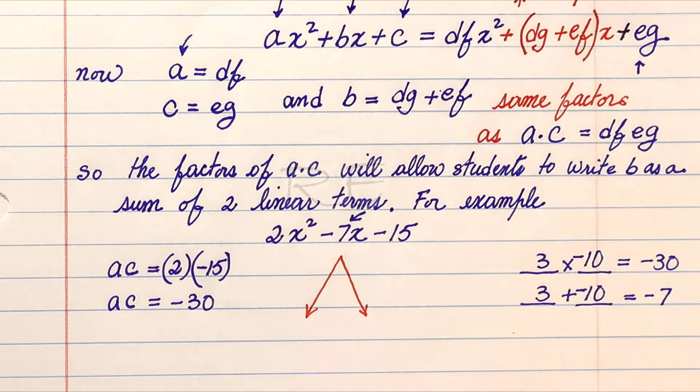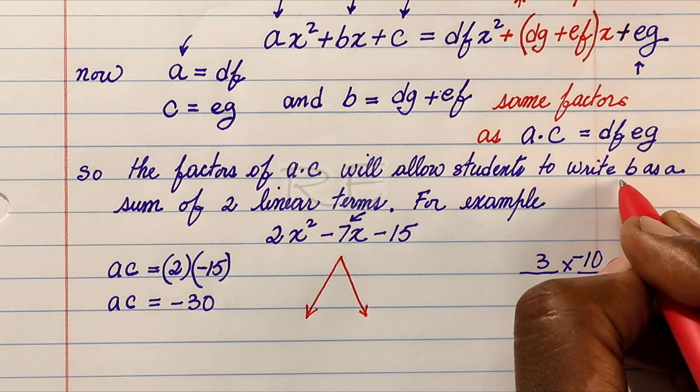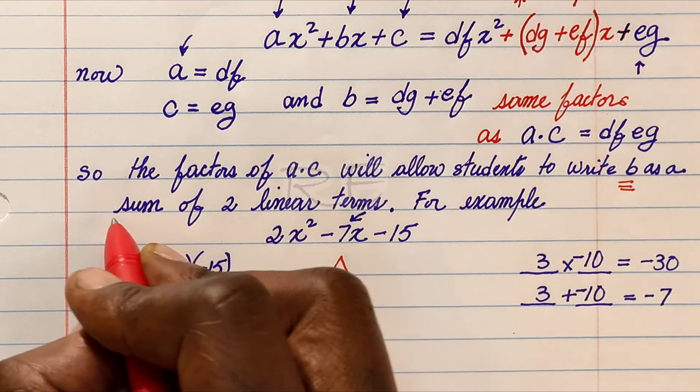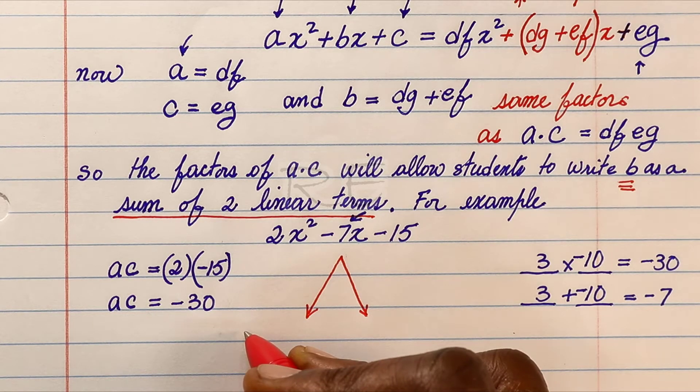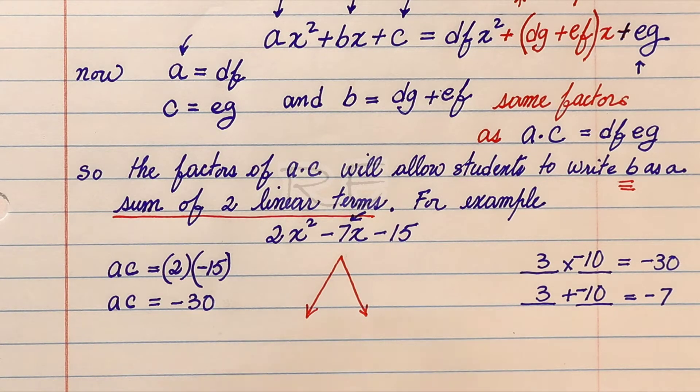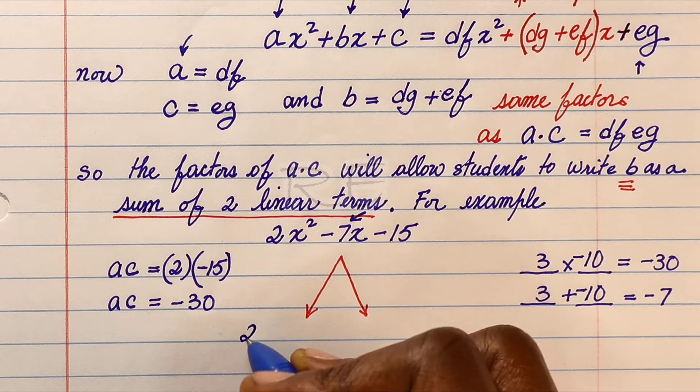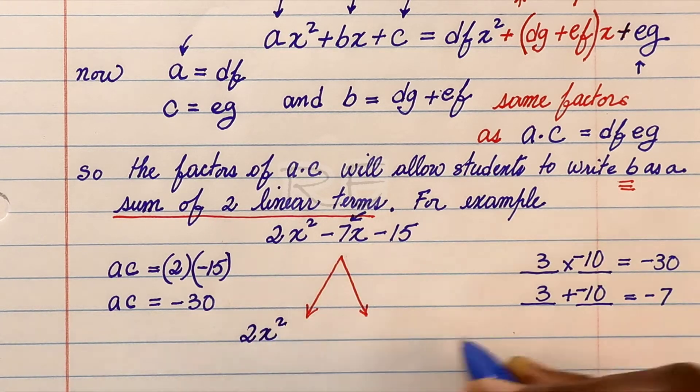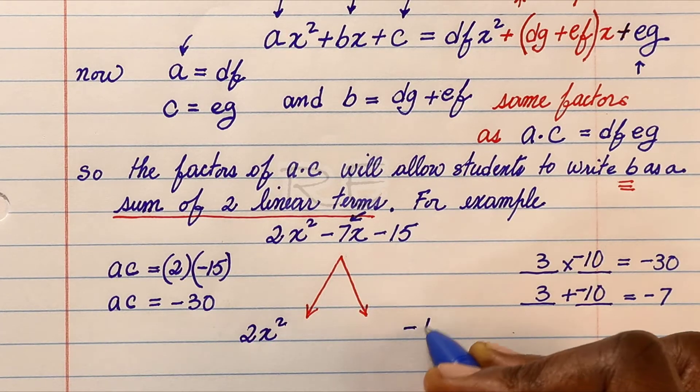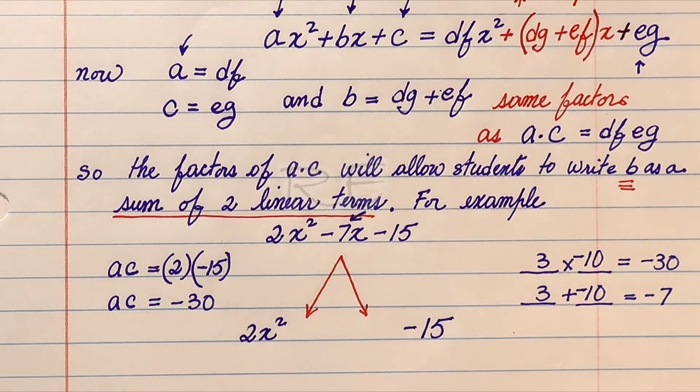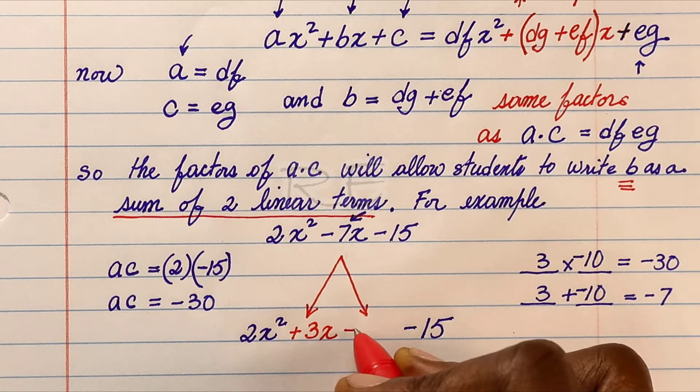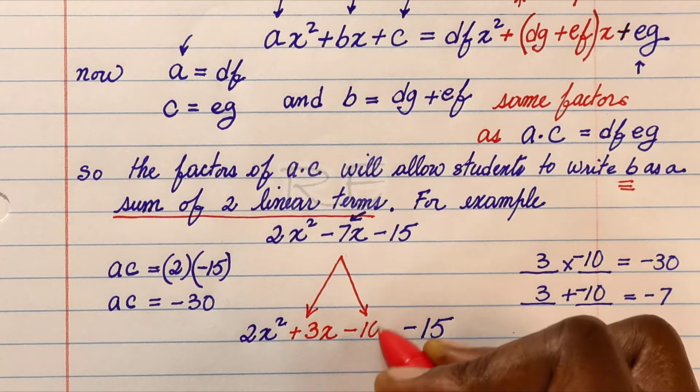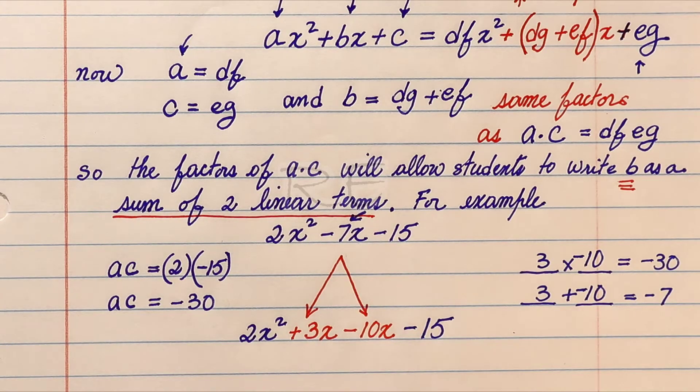So what does that mean? It means that b can be written as the sum of two linear terms, and those two terms are 3x and negative 10x. We keep 2x squared, we keep negative 15, and negative 7x will be written as plus 3x minus 10x.